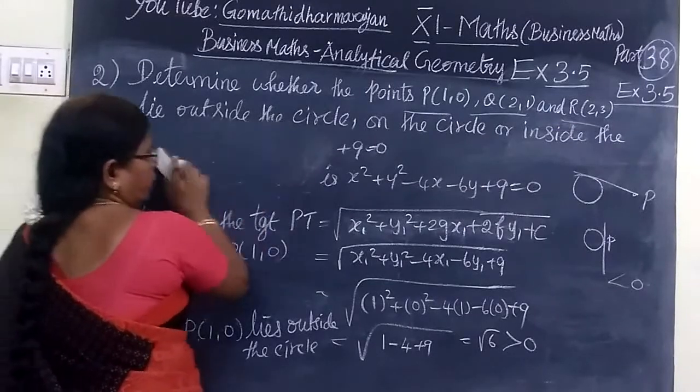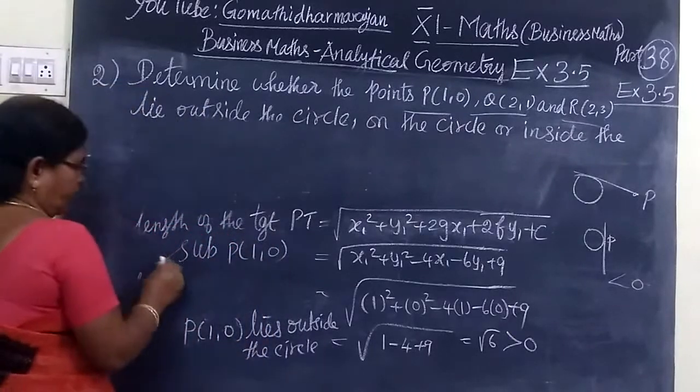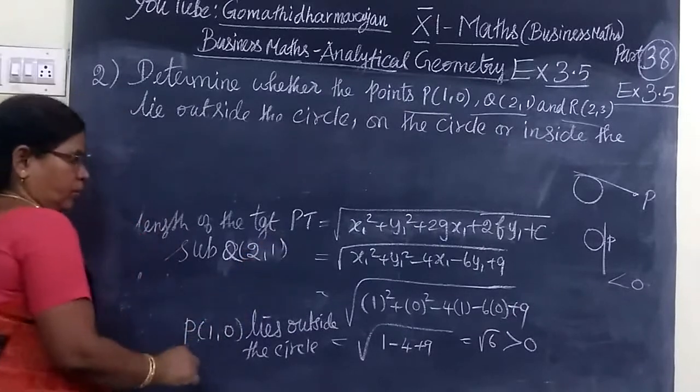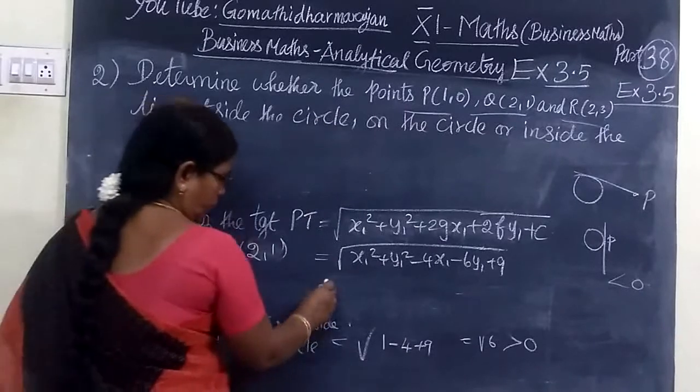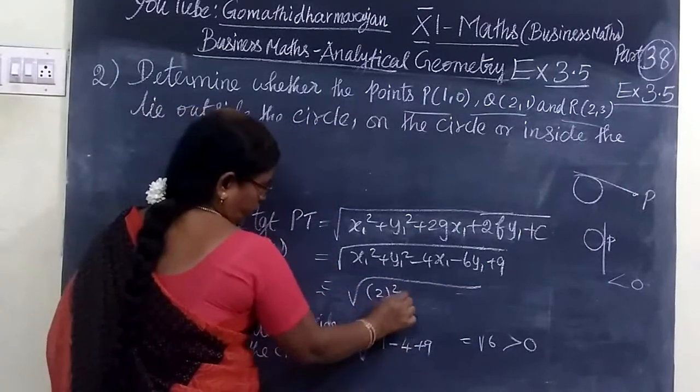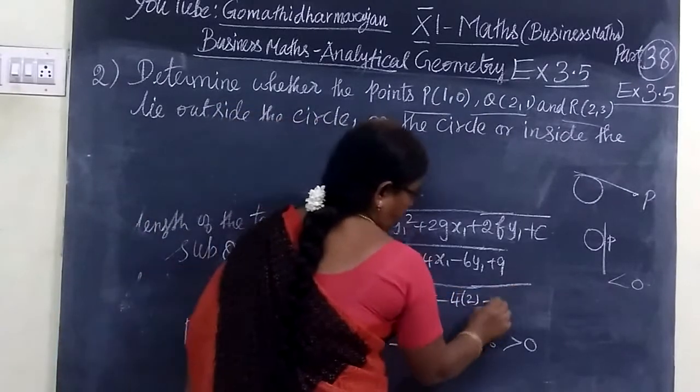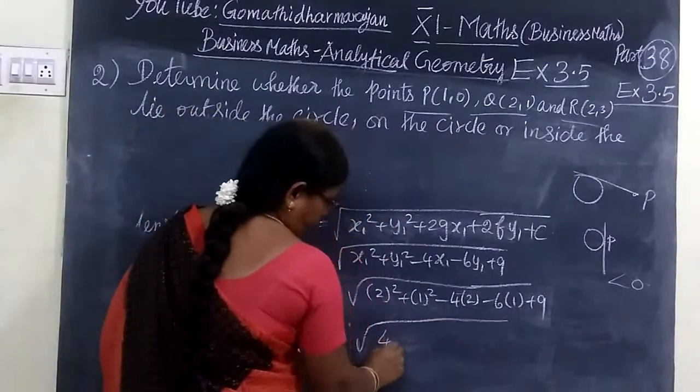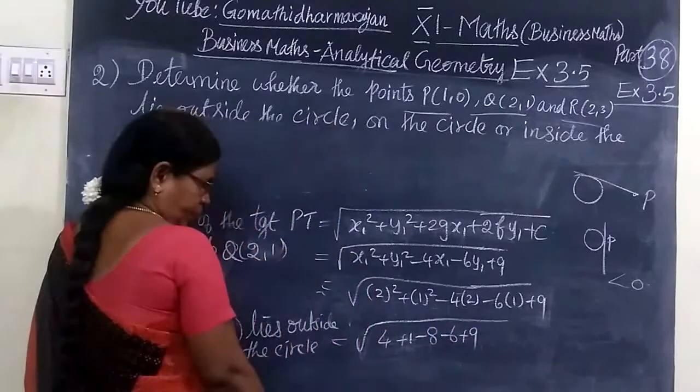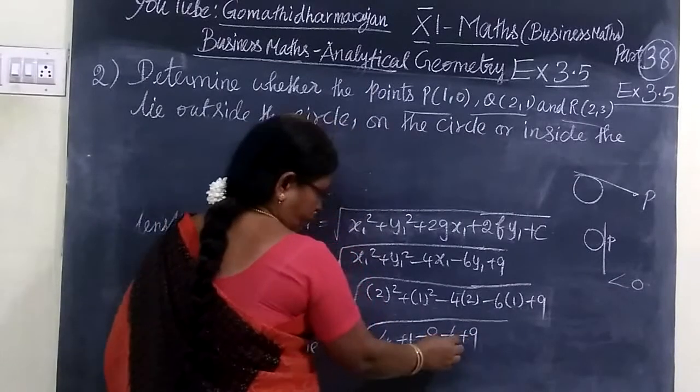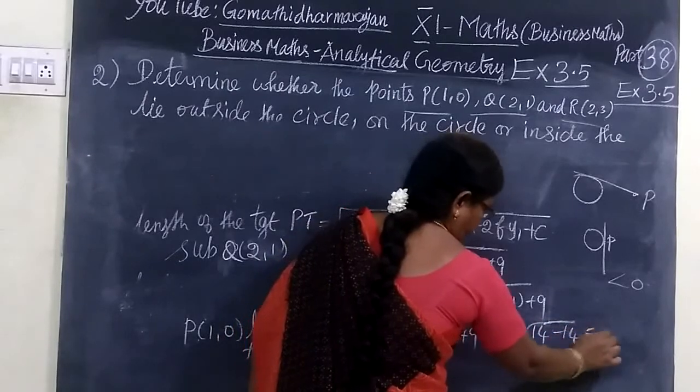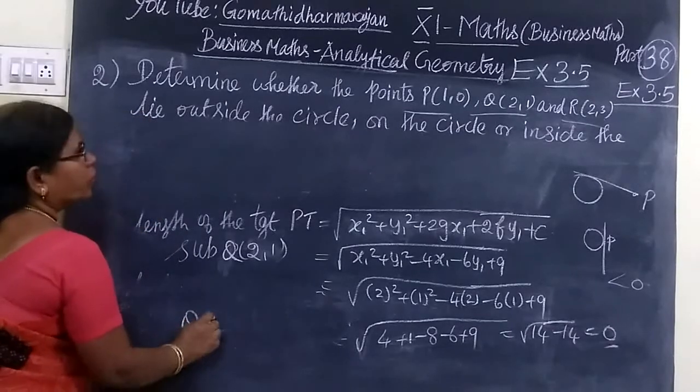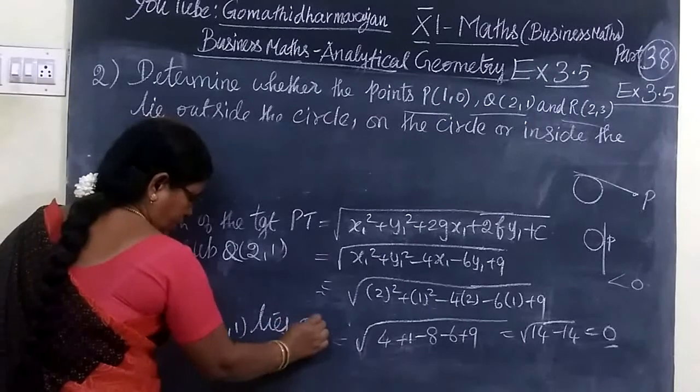Next we find for point Q. Length of the tangent at Q, where Q is 2 comma 1. Substituting: 2 square then 1 square minus 4 bracket 2 minus 6 bracket 1 plus 9. So 4 plus 1 minus 8 minus 6 plus 9. This gives 14 minus 14. So root of 14 minus 14 equals 0. If 0, the point lies on the circle. So 2 comma 1 lies on the circle.